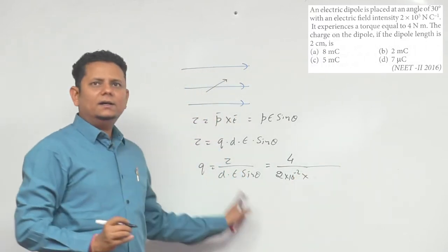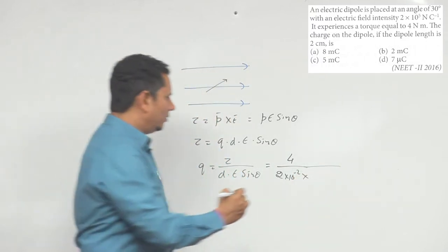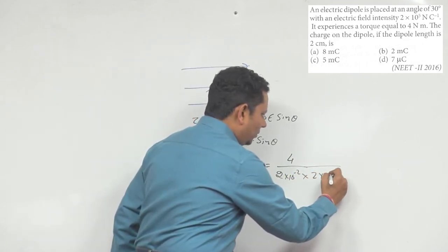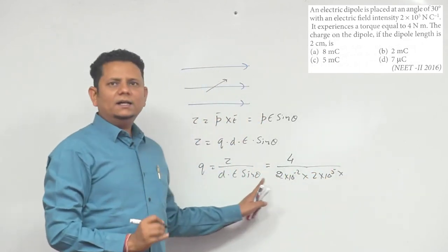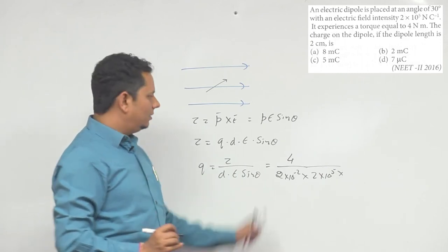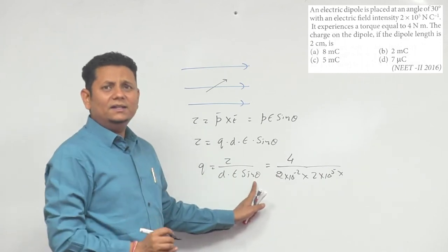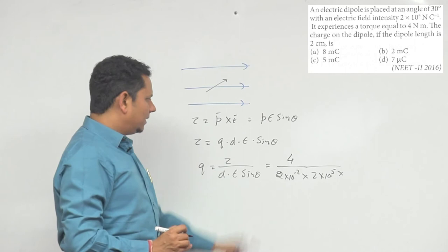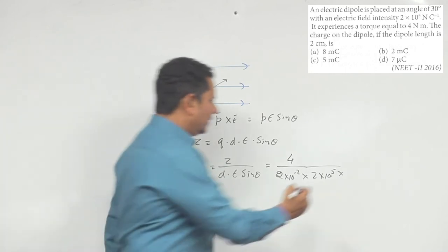Multiplied by E, the electric field which is 2×10^5, multiplied by sin theta. Theta is given as 30 degrees, which means sin theta equals half.